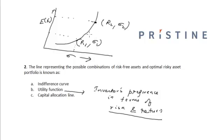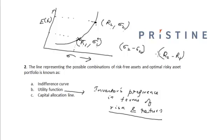We can say that the investor is indifferent between (r1, sigma1) and (r2, sigma2). This means that for the difference in risk equal to sigma2 minus sigma1, if the investor is compensated by r2 minus r1 — this additional gain in return — then the investor is indifferent.